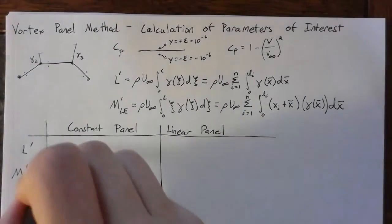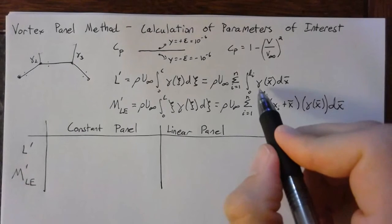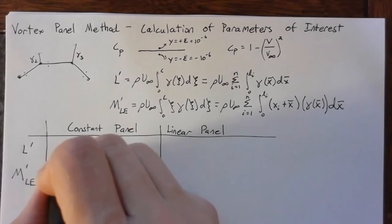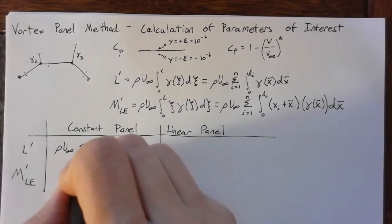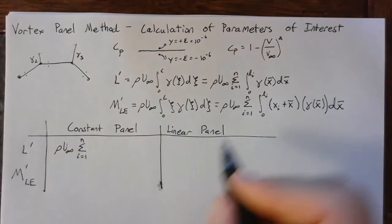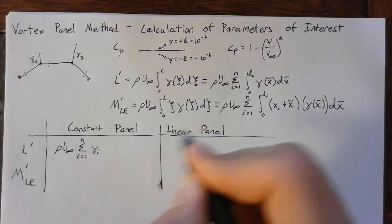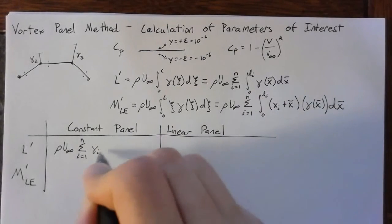So for the constant panel, our gamma is constant. So this simplifies down into rho times u infinity. And then we sum i is equal to 1 to n. And then this integral just becomes gamma sub i times L sub i.